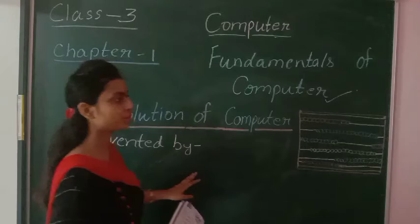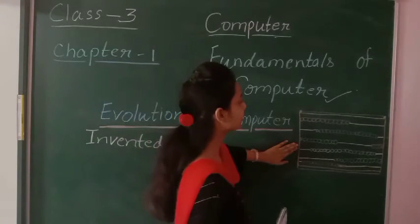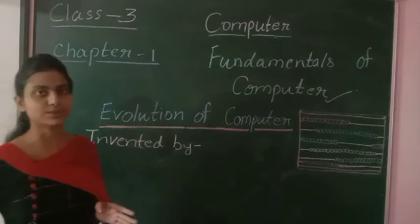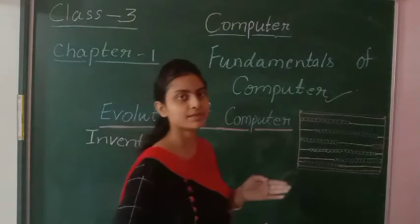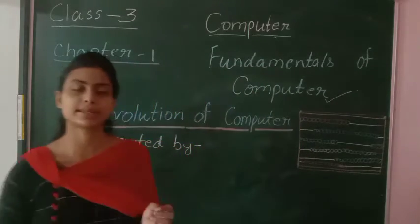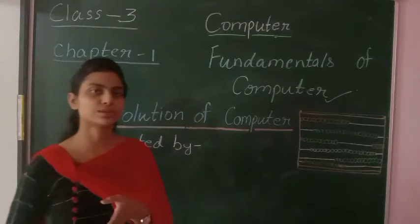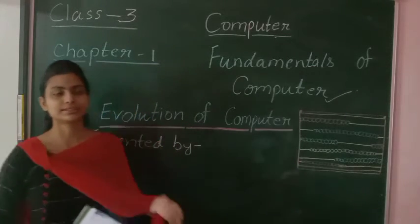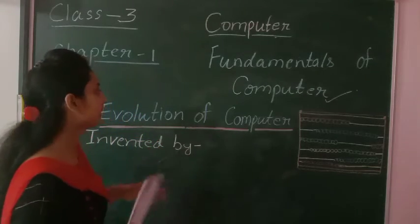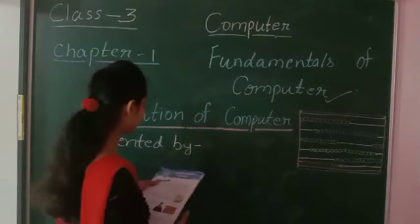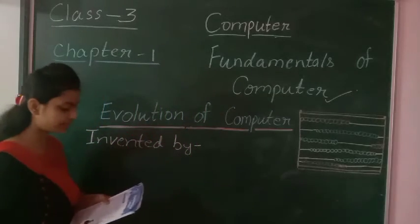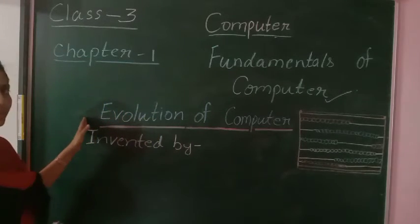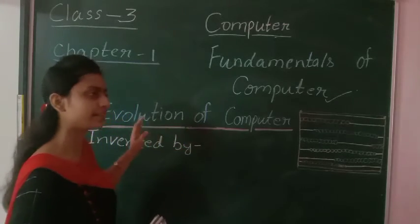So, which computer came into use first? First of all, Abacus came into use. After that, evolution of computers took place gradually. Slowly, the first computer came which could do little bit of things. Then the second came, the third came, and gradually the computers became more and more advanced. Today, we are using very advanced and smart computers in comparison to the computers made earlier. They evolved through continuous improvements in calculating devices, making continuous change over a period of time.